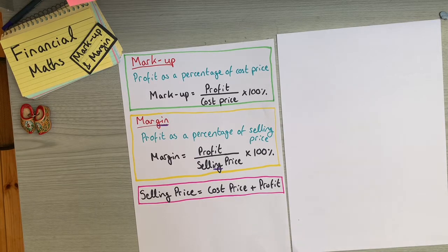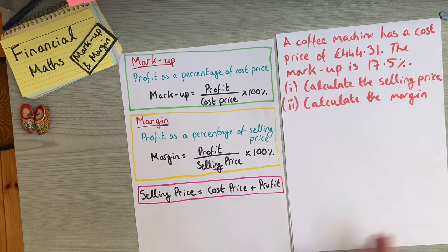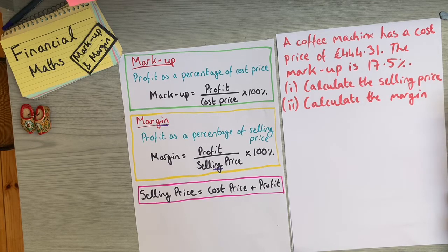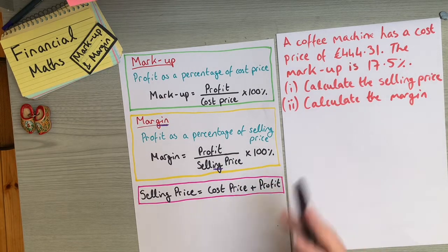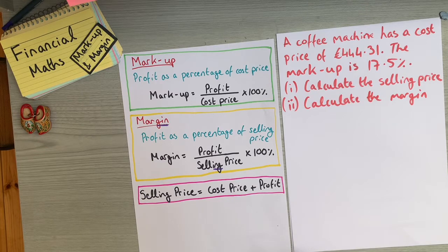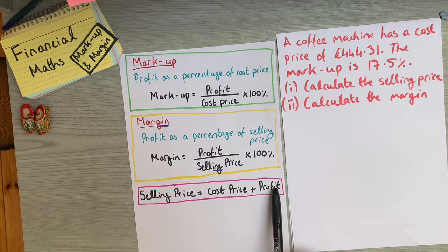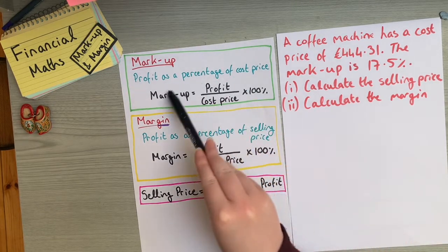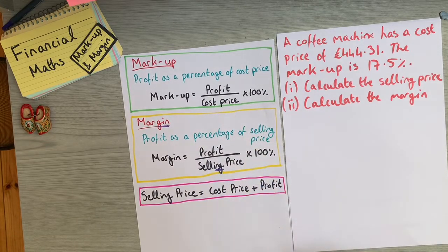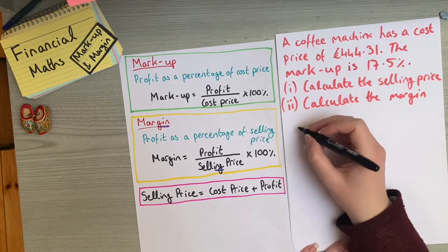Let's look at an example. A coffee machine has a cost price of €444.31 and the markup is 17.5%. Calculate the selling price. We have the cost price and the markup but not the profit. To calculate the selling price we first need the profit, so we'll use the markup formula: markup = (profit / cost price) × 100, since we have the markup and the cost price.